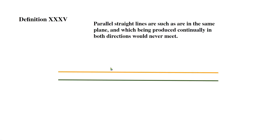Definition 35: parallel straight lines are such as are in the same plane which, being produced continually in both directions, would never meet. Parallel straight lines are in the same plane but they will never meet — even if they continue infinitely, they still will never meet.